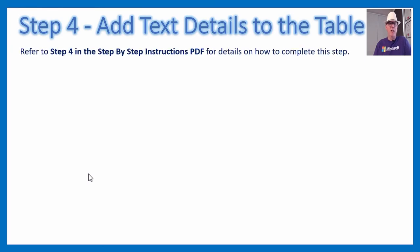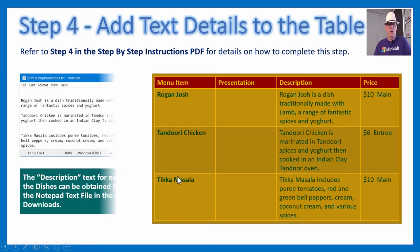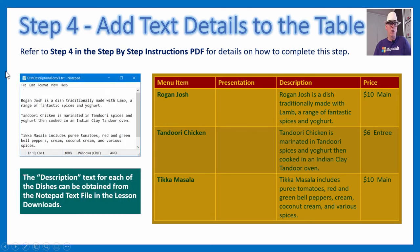Step four: adding text details to the table. Following the detailed PDF instructions, type the column headings: Menu Item, Presentation, Description, Price — in an orange color so they appear yellow against the dark red background. Then add the dish names: Rogan Josh, Tandoori Chicken, and Tikka Masala. For the descriptions, use the text document from the downloads — just highlight the text and press Control-C to copy, then right-click and Paste into the Description cell in PowerPoint.